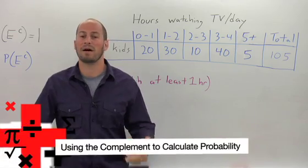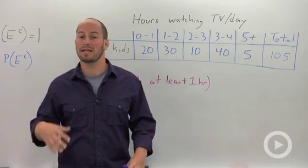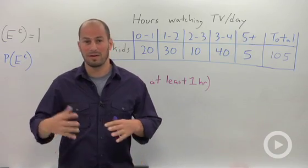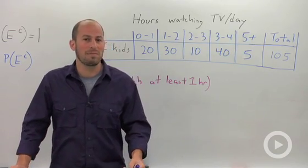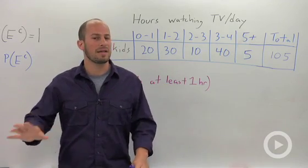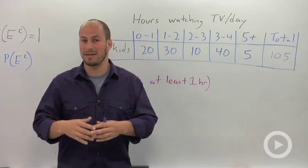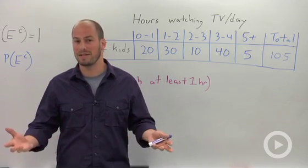Sometimes it's pretty hard to find the probability of an event occurring, so what we do is actually use the complement of the event to find the probability we're looking for. The complement is basically the probability of something not happening. Typically the keyword you're going to see in these instances is at least. At least is telling us that we're dealing with a number of different situations.